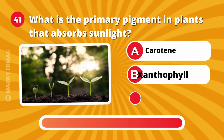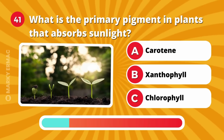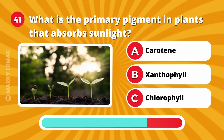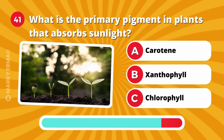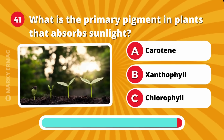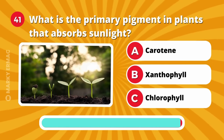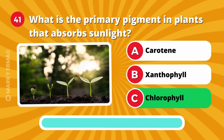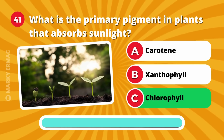What is the primary pigment in plants that absorbs sunlight? Carotene, xanthophyll, or chlorophyll? Feeling smart today? Chlorophyll!